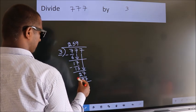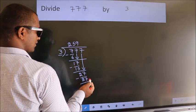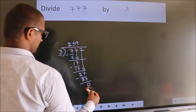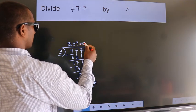Now we subtract. We get 0. No more numbers to bring down. So we stop here. This is our remainder. This is our quotient.